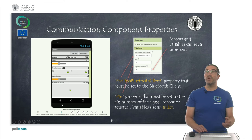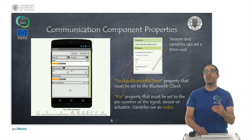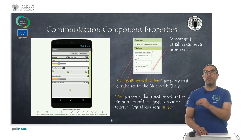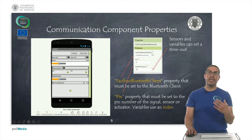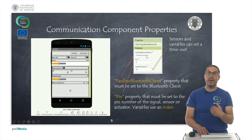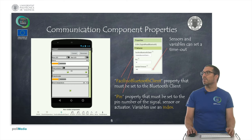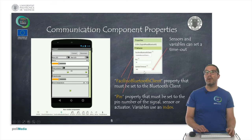In the case of variables, instead of a pin we use an index. Variables are indexed, so we can access variable number 0, number 2, number 5, depending on what we want. Sensors and variables that need to read something and require a response have an update timeout setting.